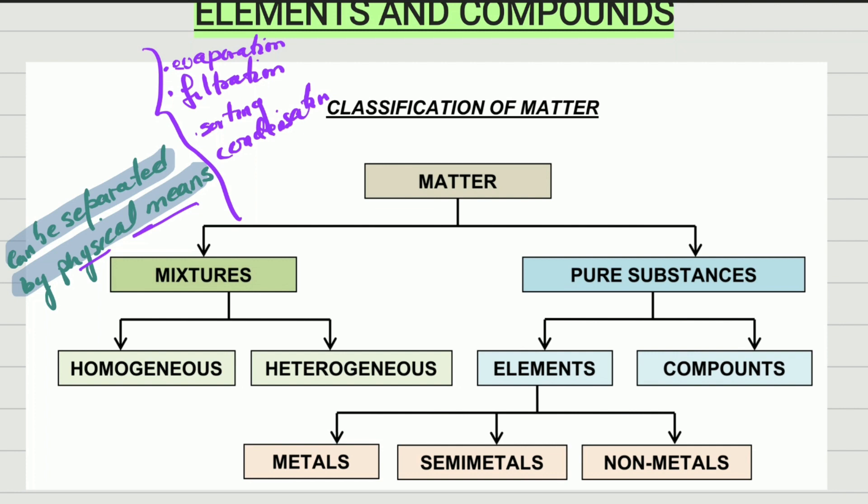Mixtures can be divided into two groups that we are not going to learn now. You just need to know that there are two types of mixtures: homogeneous and heterogeneous. But you don't have to learn more about them for now — that will be for other grades. So to recap: matter can be divided into mixtures and pure substances, and mixtures can be separated by physical means.